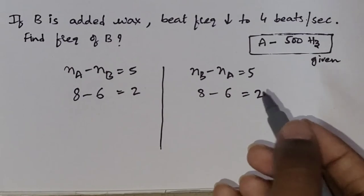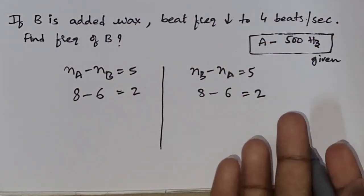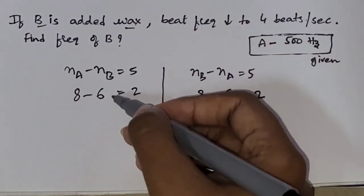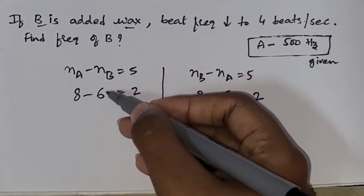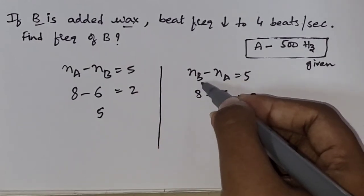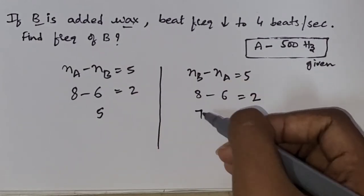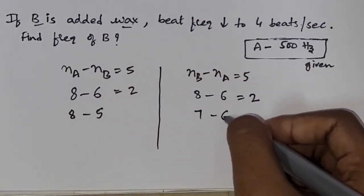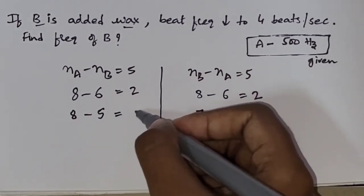Now, check whether A or B is waxed or filed. They are saying B is waxed. So, you have to decrease now B. So, 6 decreases to 5. Here, 8 decreases to 7. Write the remaining as it is. Now, subtract these.